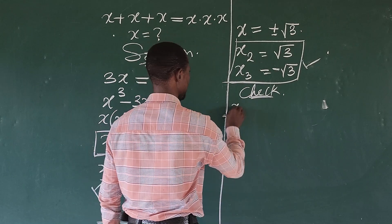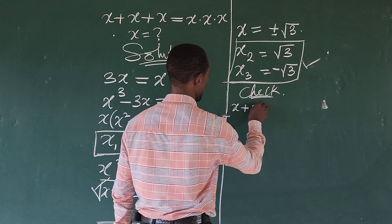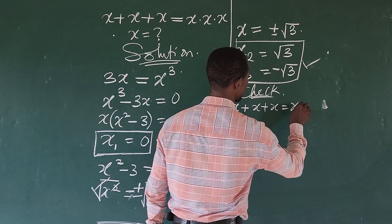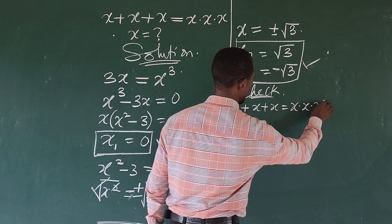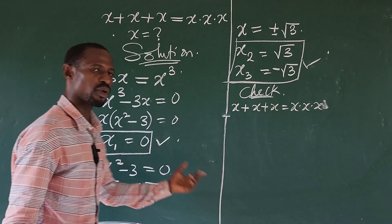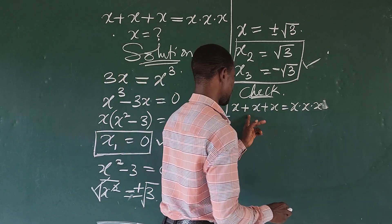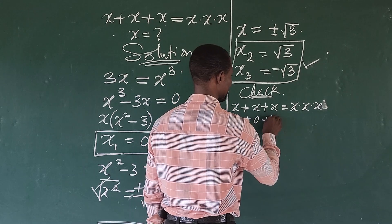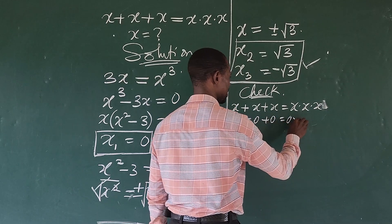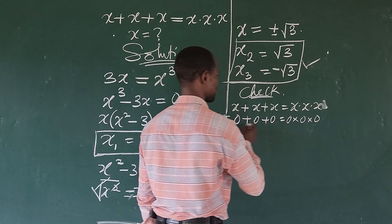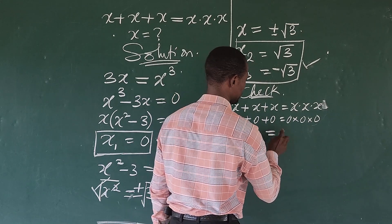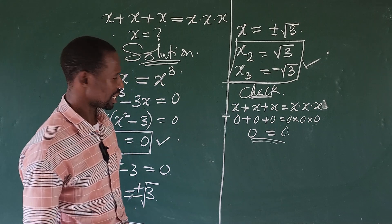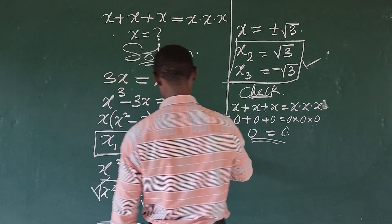Our original equation is x plus x plus x equal to x times x times x. The first one is x equal to 0. So if we put 0 here, this gives us 0 plus 0 plus 0 equal to 0 times 0 times 0. So 0 plus 0 plus 0 gives us 0, and 0 times 0 times 0 gives us 0.